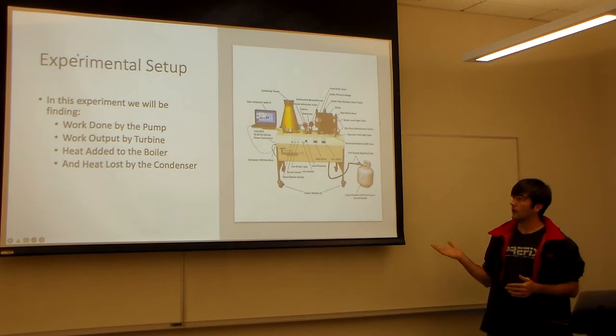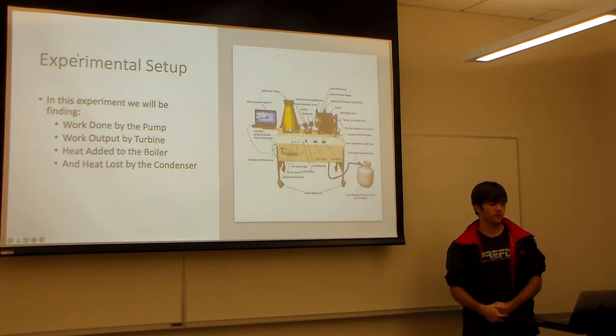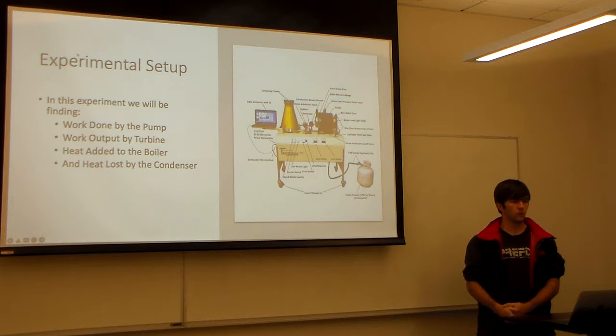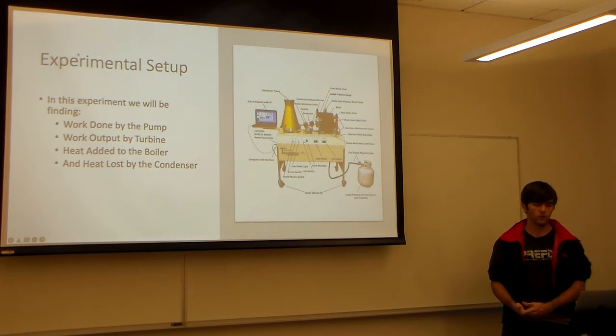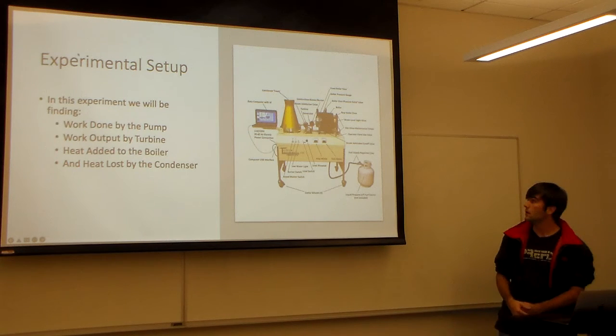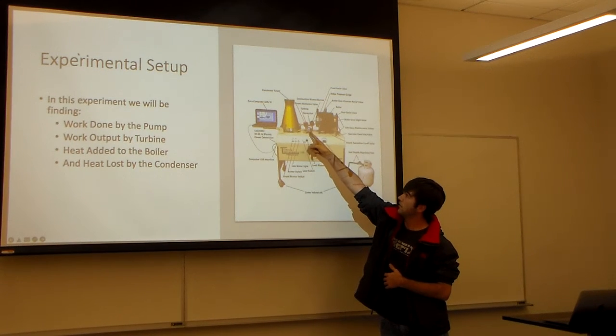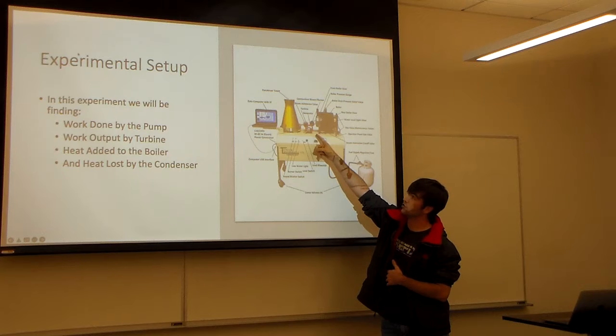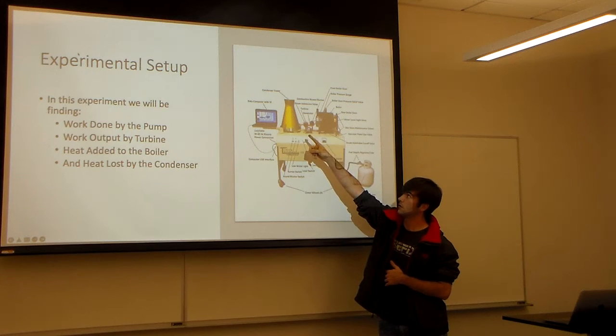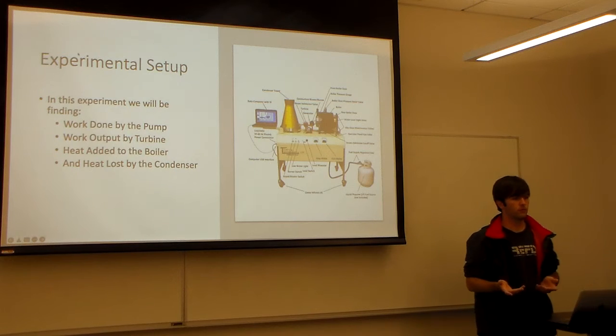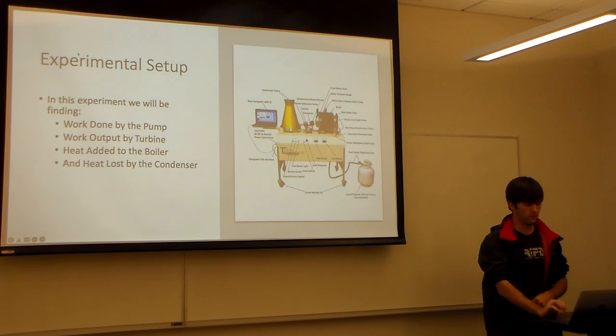This is what we actually used today in the experiment. I thought it was a closed system, so I thought we were having to find the work done by the pump. We find the work output done by the turbine and the heat added to the boiler and the heat lost by the condenser. So you can see here this is the boiler. The turbine is very small down there. It's connected to a generator and that's the condenser. But the system is open to the air so there's no pump and you have to add water to it as you want to use it.